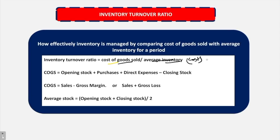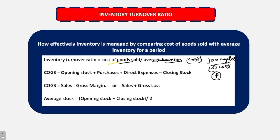For example, you produce cycles and have a stock of 100 cycles in your warehouse. When you are stocking these cycles, you are going to value them at cost rather than at the sale price, because the sale price will include the profit margin also. So when you are stocking them, you stock them at cost. Therefore, when comparing inventory to turnover, we take cost of goods sold upon average inventory and not net sales upon average inventory.